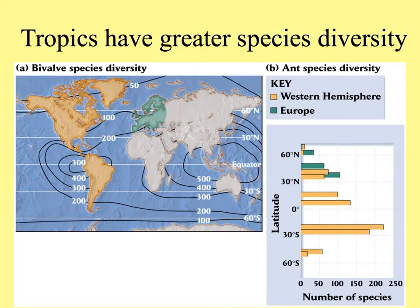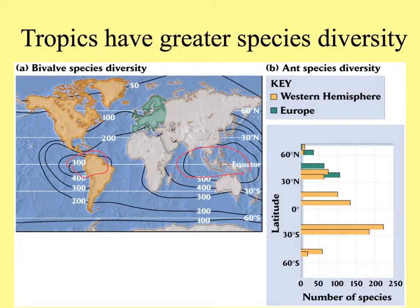The tropics not only have greater richness but greater diversity overall. Here are two figures to illustrate this. On the left, bivalve species diversity isospecies lines show the lines enclosing an area of average diversity, and the most intense areas are in tropical equatorial regions. On the right is a bar graph showing ant species diversity at different latitudes, comparing the western hemisphere — the Americas — with northern Europe. The northern latitudes have similar diversity, but it gets much greater especially south of the equator.